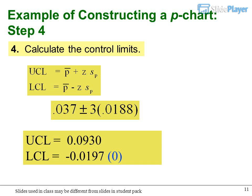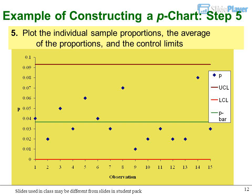Step 4: Calculate the control limits. UCL equals 0.0930, LCL equals minus 0.0197. Step 5: Plot the individual sample proportions, the average of the proportions, and the control limits. R-chart: type of variables control chart shows sample ranges over time.